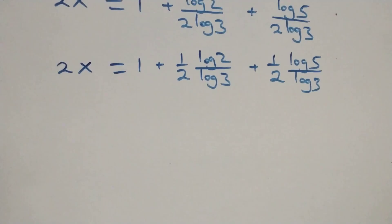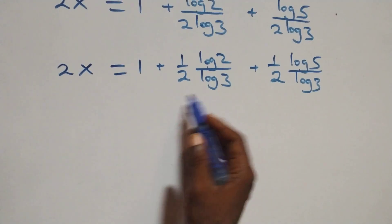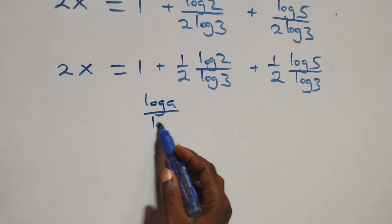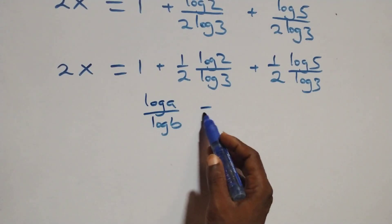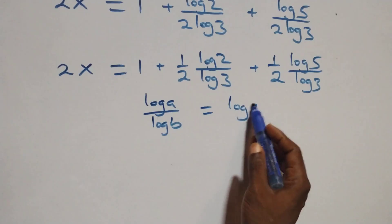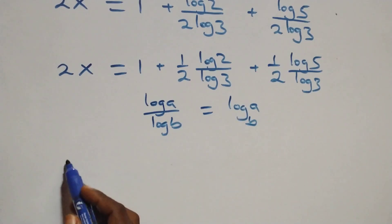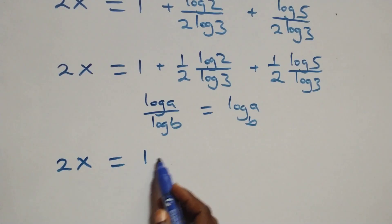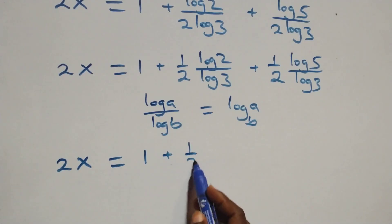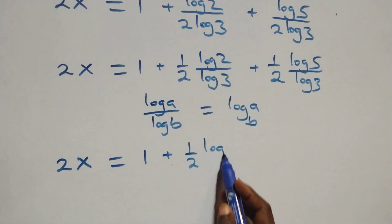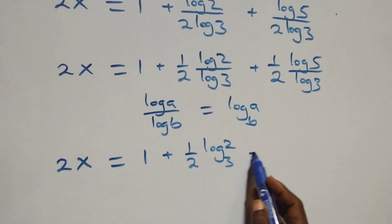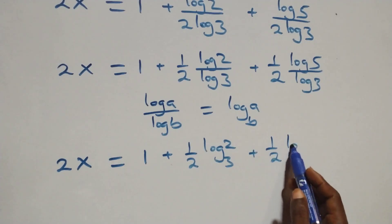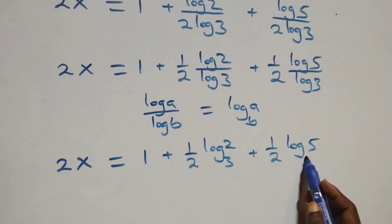At this point we apply the change of base formula. When we have log a over log b, this is the same thing as log a to base b. So we have 2x equals 1 plus one-half times log 2 base 3 plus one-half times log 5 base 3.